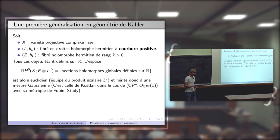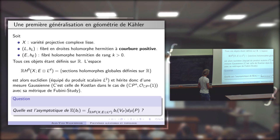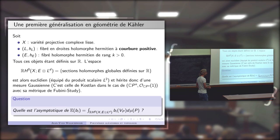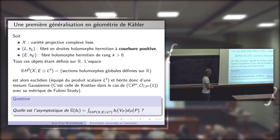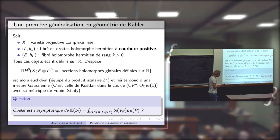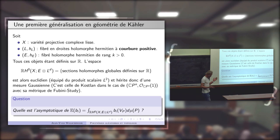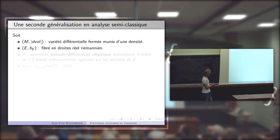Dans ce cadre géométrique, on peut poser exactement la même question : quelle est l'asymptotique de l'espérance des nombres de Betti du lieu d'annulation ? C'est dans ce cadre que tous les résultats présentés sont établis. Il y a un deuxième cadre, plus analytique, celui de l'analyse semi-classique, où on peut se poser les mêmes questions de topologie aléatoire.